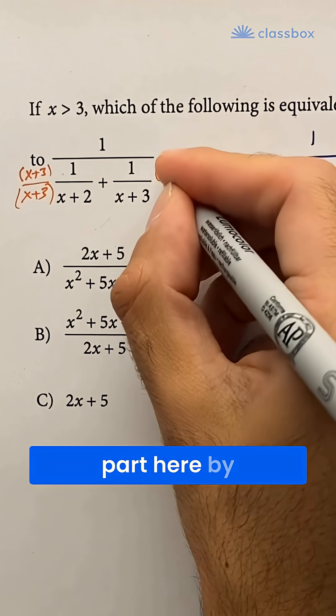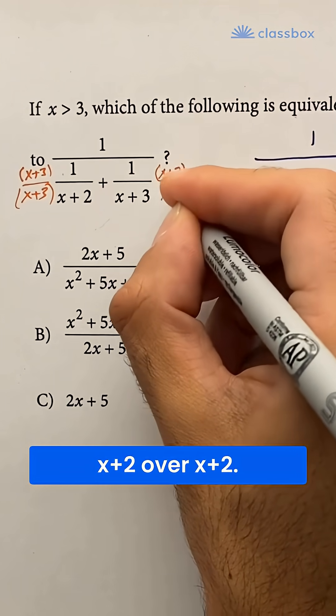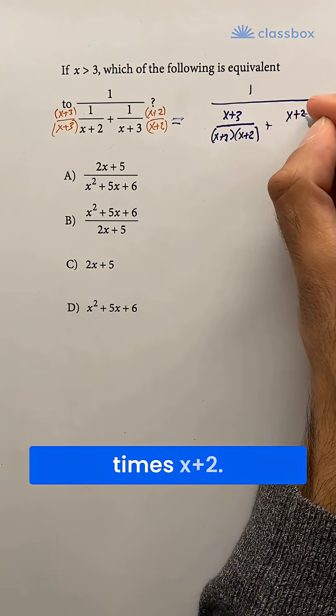And then we can multiply the second part here by x plus 2 over x plus 2. That gives us x plus 2 over x plus 3 times x plus 2.